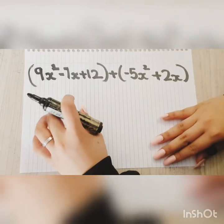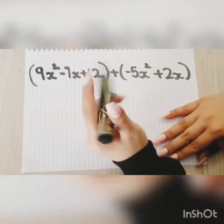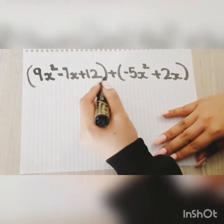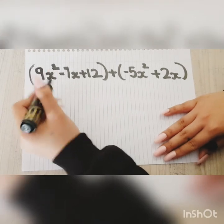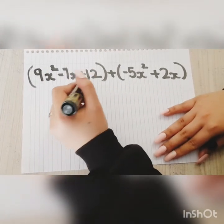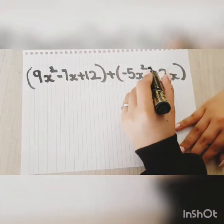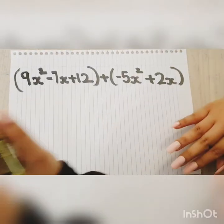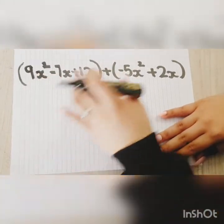Take a look at our first example. We have two terms which are separated by a sign that's called the addition sign. We have 9x² - 7x + 12 and -5x² + 2x. The first step is to write them just the way they are.